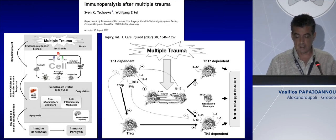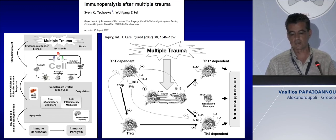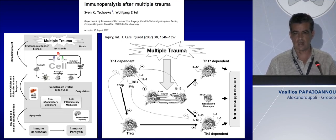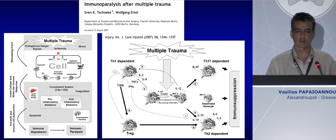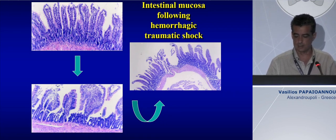Immunoparalysis: many theories have shown that trauma and necrosis of different cells can induce the release of different molecules — the so-called DAMPs, danger-associated molecular patterns — which can induce inflammation in remote organs, activate endothelial cells, coagulation factors, and complement. This alteration in the immune response induces a shift from TH1 to TH2 response, meaning an anti-inflammatory response with activation of monocytes. This immunoparalysis can be associated with a high incidence of infection two to three weeks later during the ICU stay.